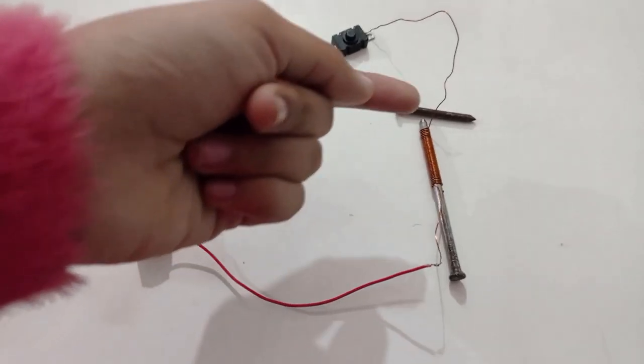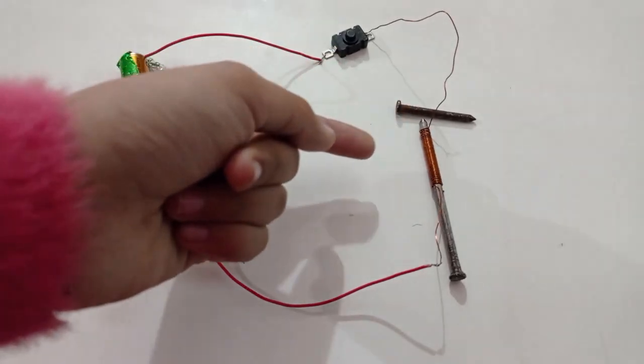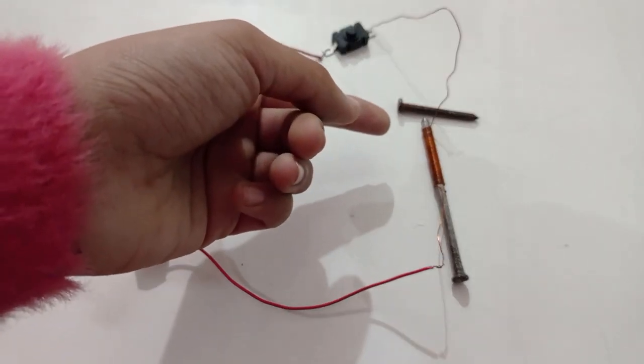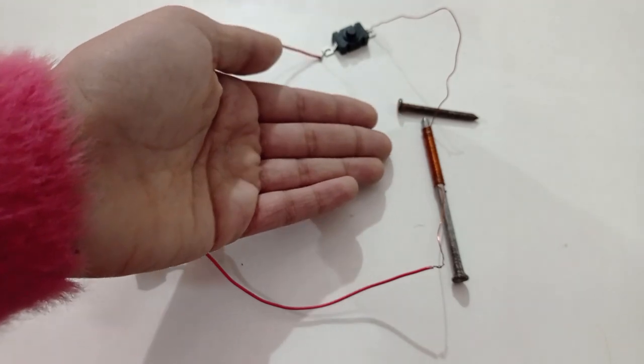This coil behaves like a magnet when electric current flows through it. When electric current is switched off, the coil loses its magnetism. Such coils are called electromagnets.